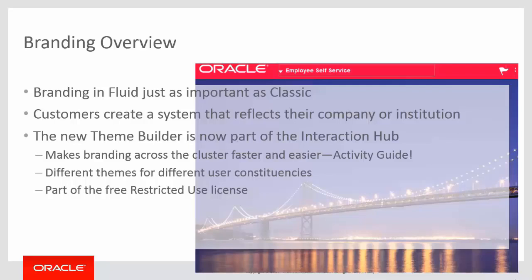You can create different themes for different user constituencies. For example, if a university has different campuses in their university system, they might have different brandings for each campus. Similarly, in a commercial enterprise, a company might have different brandings for different divisions or regions. The ThemeBuilder is part of the restricted-use license of the Interaction Hub, which can be installed free of license charge, and customers can use the Interaction Hub as part of that free restricted-use license.